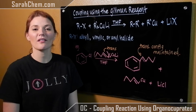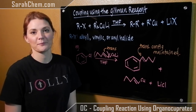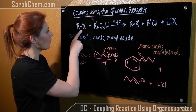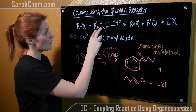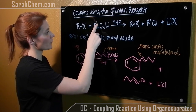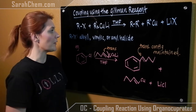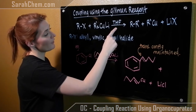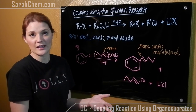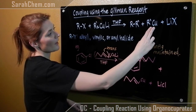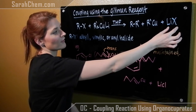This is a video tutorial on coupling reactions that use the Gilman reagent, or an organocuprate. We have an alkyl, vinyl, or aryl halide and we react it with the Gilman reagent. The R prime notation indicates that the two R groups do not necessarily have to be the same. In THF solvent, the two R groups get coupled together — that's where the coupling reaction name comes from. We also get the copper group left over with one R attached, along with a lithium halide byproduct.